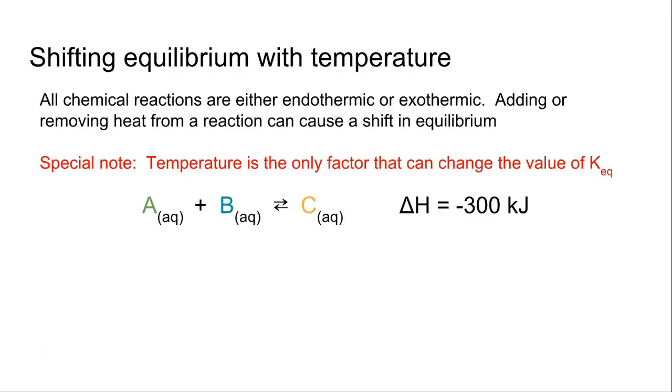So let's look at an example here. We have A plus B yielding C again. And you'll notice it has a delta H equal to negative 300 kilojoules. Since we just covered that in the last chapter, you should know that a negative delta H value or a negative change in enthalpy is what we consider an exothermic reaction, which means heat is given off.